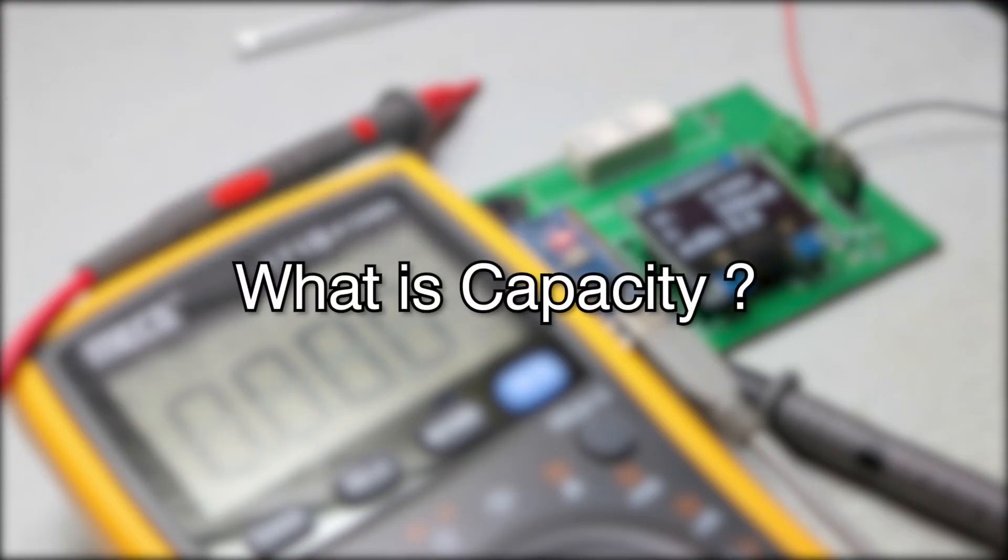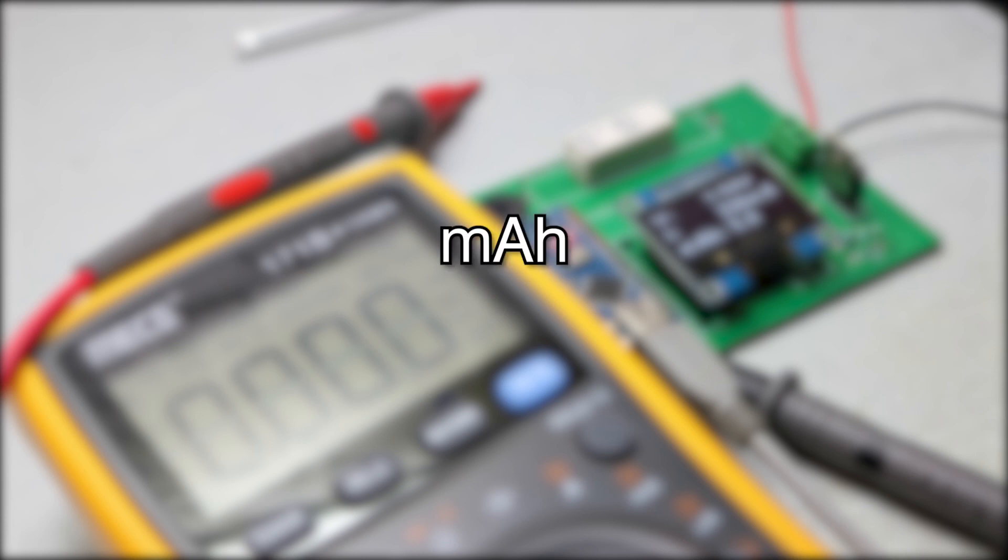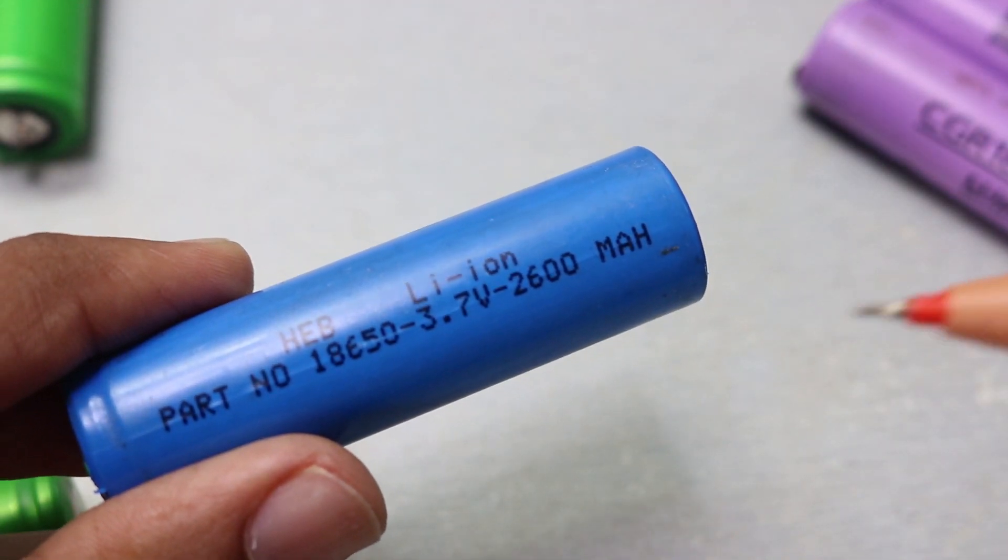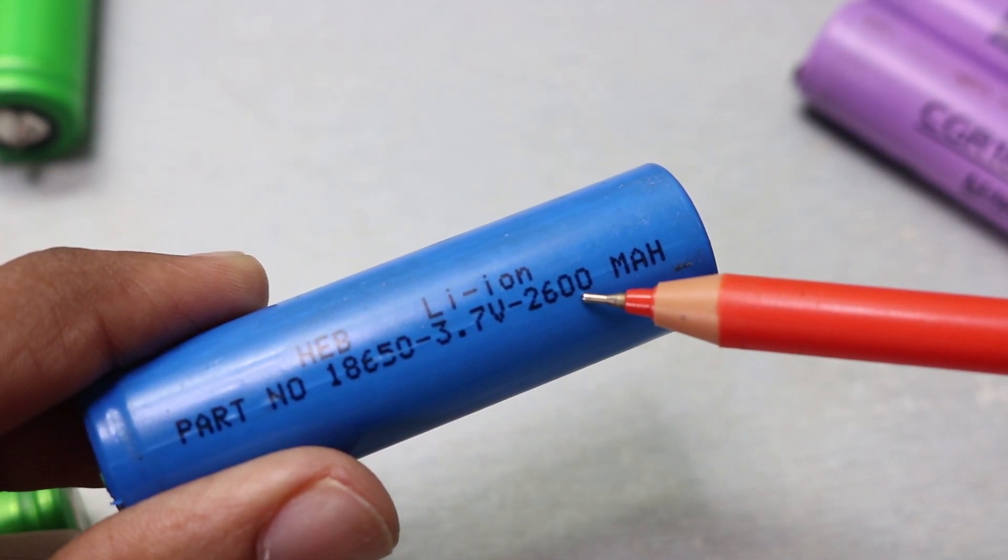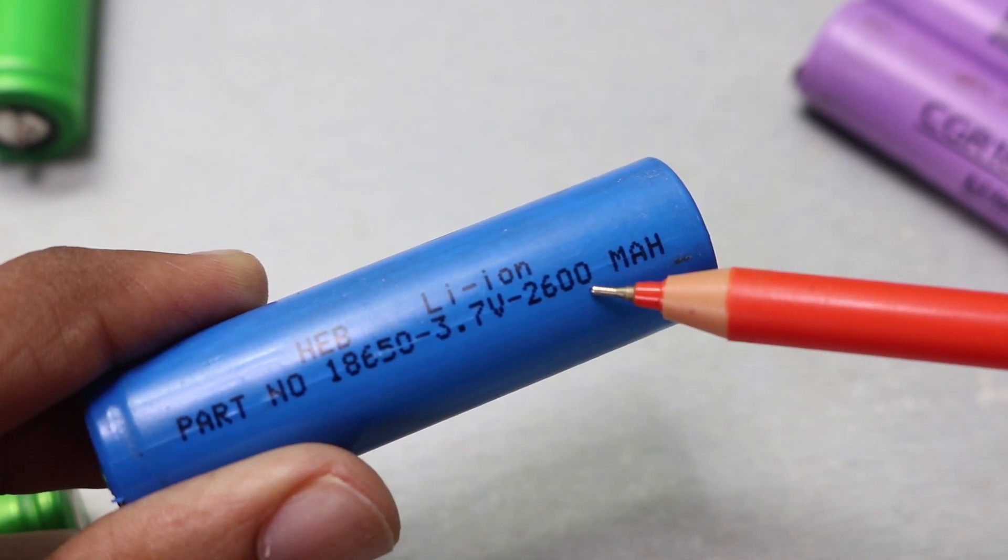Before building the capacity tester we must know what is capacity. The unit for the capacity is milliampere or ampere. If you take a look at any lithium-ion cell they will mention its capacity on it. As this one mentions 2600 milliampere on it.